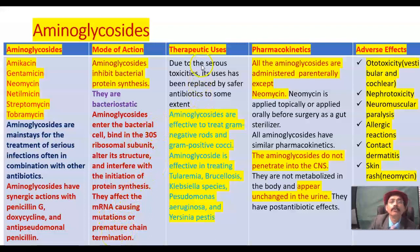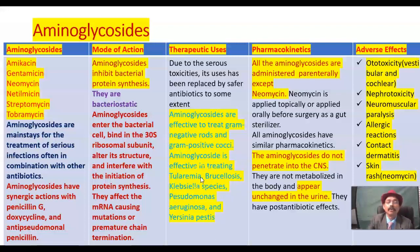Therapeutic uses: due to serious toxicities, their use has been replaced by safer antibiotics like third-generation cephalosporins and quinolones to some extent. Aminoglycosides are effective in treating gram-negative rods and gram-positive cocci. Aminoglycosides are also effective in treating tularemia — a disease found in hunters — especially gentamicin.